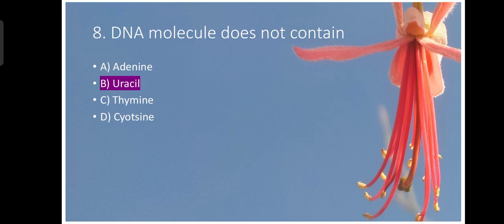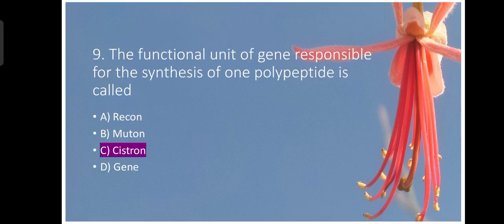DNA molecule does not contain uracil. RNA contains uracil. So the B option is correct. Question number nine. The functional unit of gene responsible for the synthesis of one polypeptide is called Cistron. Cistron is responsible for polypeptide.